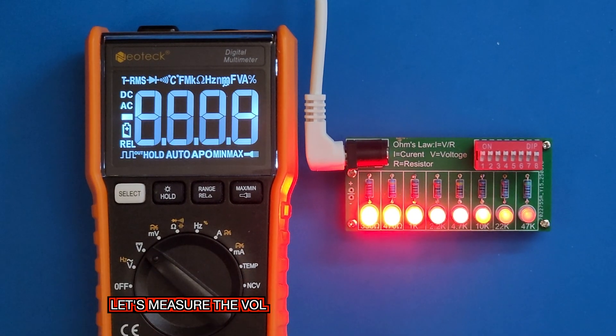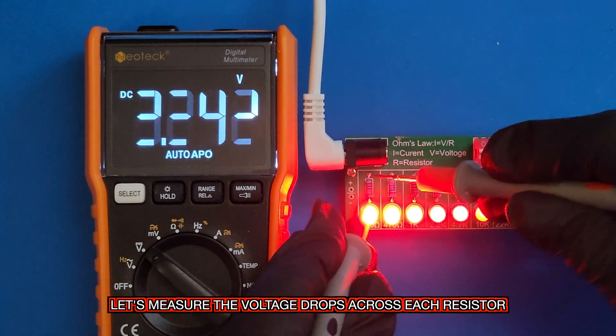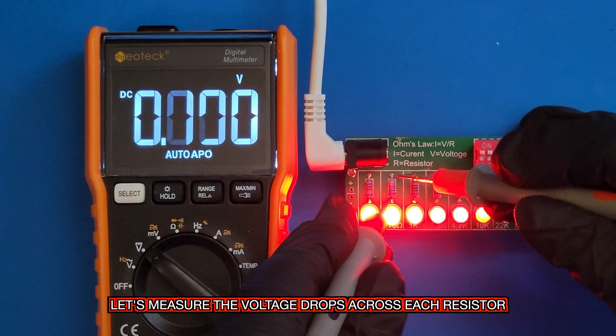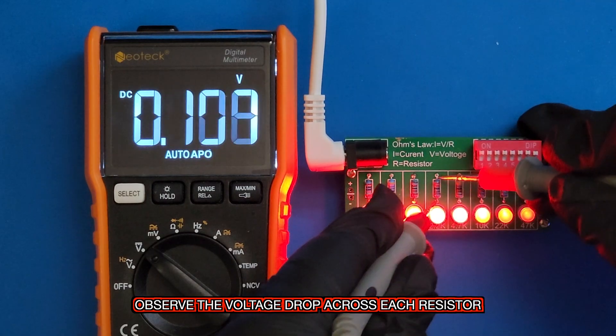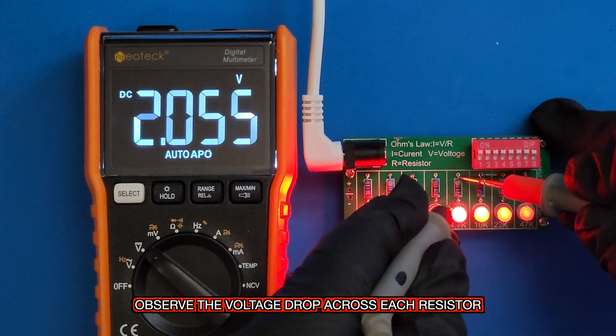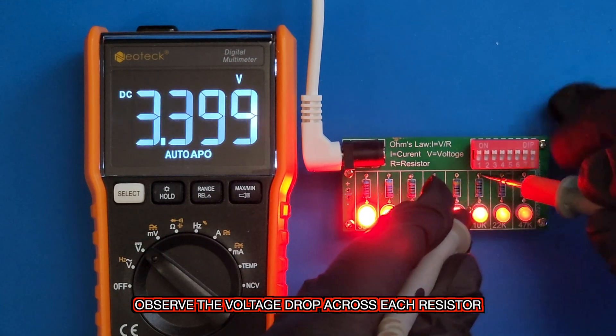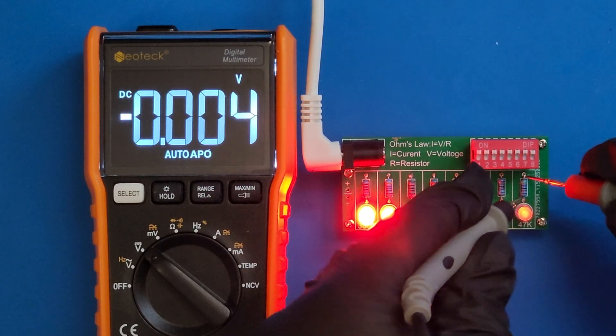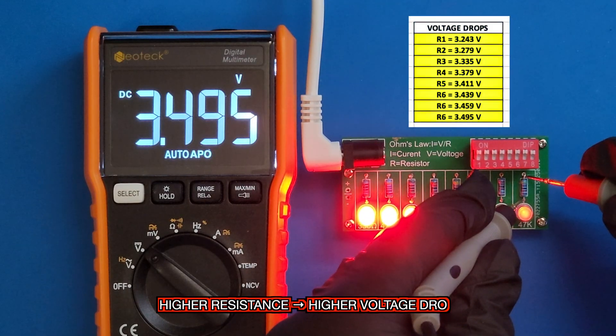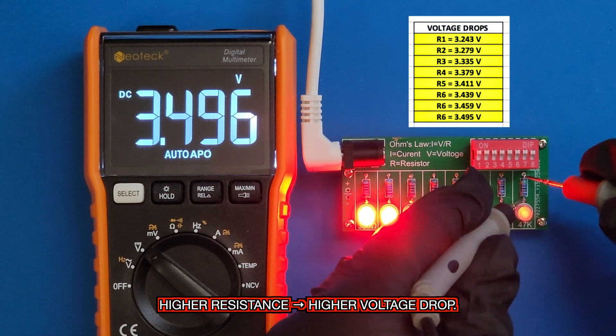Now, let's measure the voltage drop across each resistor. Observe the voltage drop across each resistor. The higher the resistance, the higher the voltage drop.